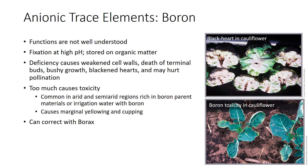A shortage of boron often appears as death of terminal buds followed by tight, bushy growth known as rosette growth. Thick, fleshy tissues such as cauliflower stems may crack, become hollow, and begin to rot, causing a black heart symptom. Boron toxicities are relatively common in arid and semi-arid regions, with soils or parent materials rich in boron, or where irrigation water contains boron. Boron tends to migrate to leaf margins, where it may cause marginal yellowing and cupping.